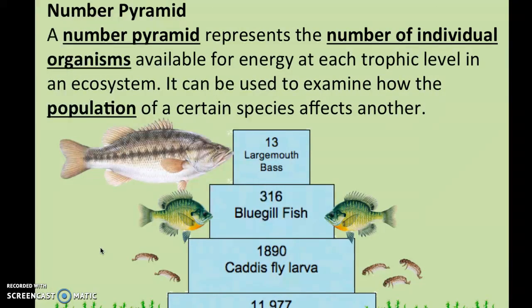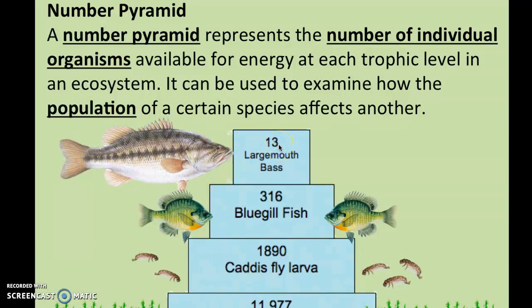Numbers pyramid — the next example of an ecological pyramid. A numbers pyramid represents the amount of organisms available at each trophic level in an ecosystem, looking at populations and how they compare to one another. In this example, there are 11,977 aquatic plants as the producers. The primary consumers are caddisfly larvae. They're eaten by bluegill fish at the secondary consumer level — 316 of those in this particular habitat. The smallest group but largest organism is 13 largemouth bass as the tertiary consumer.